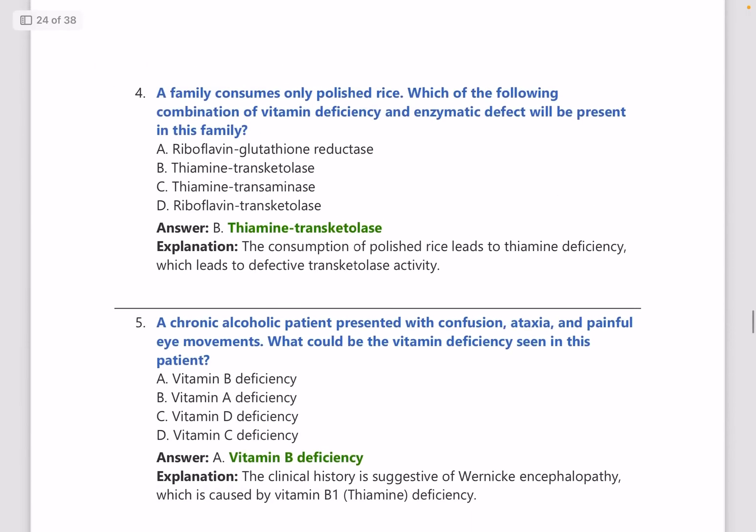A family consumes only polished rice. Which combination of vitamin deficiency and enzymatic defect will be present? The answer is thiamine deficiency, and it is tested by the transketolase assay.